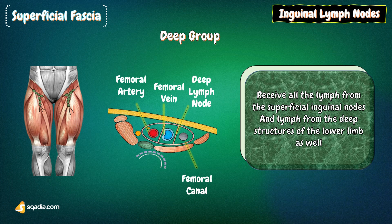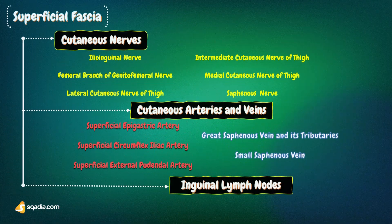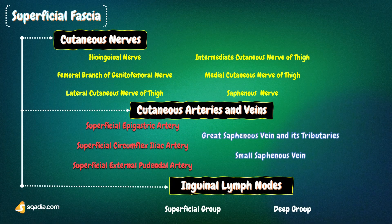That is all about the superficial fascia of the region of the thigh. We have already discussed many important structures in this region. The deep fascia of the thigh, which divides it into three compartments, will be covered in the next section.